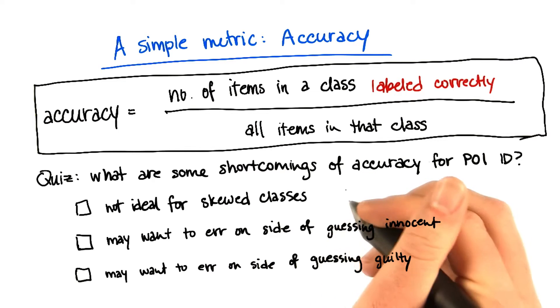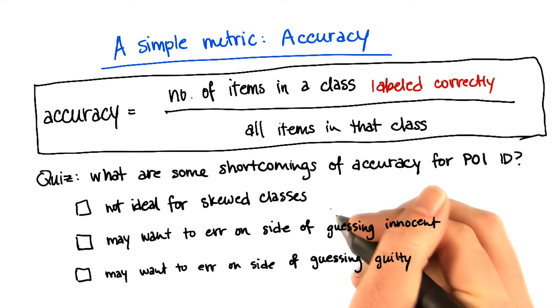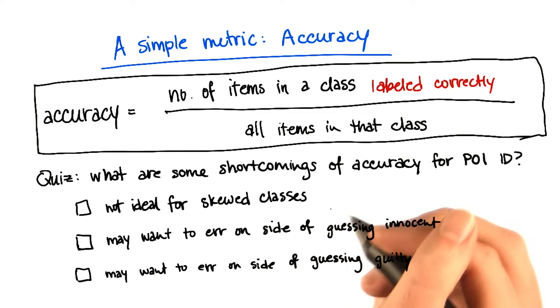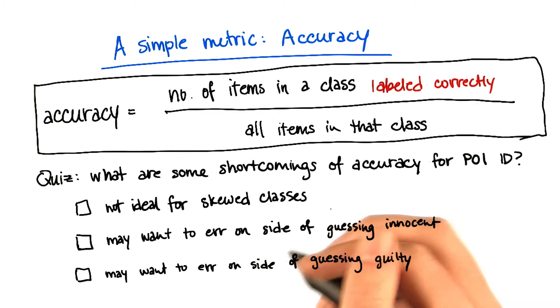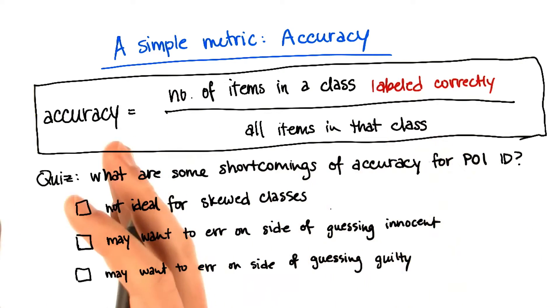The first possible problem is that maybe accuracy is not ideal for skewed classes. So a skewed class would be an example of where you have many data points, and a few of them fall into one class, and many of them fall into the other class.